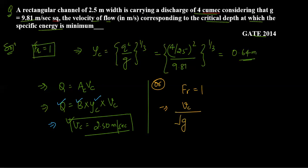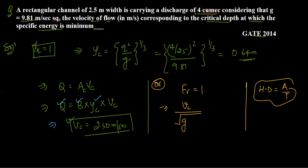The second approach uses hydraulic depth. Hydraulic depth is defined as area upon T, where T is the top width. In the context of the Froude number, the hydraulic depth term is A divided by T — that is wetted area upon top width. For a rectangular channel, this simplifies to Yc, the critical depth.